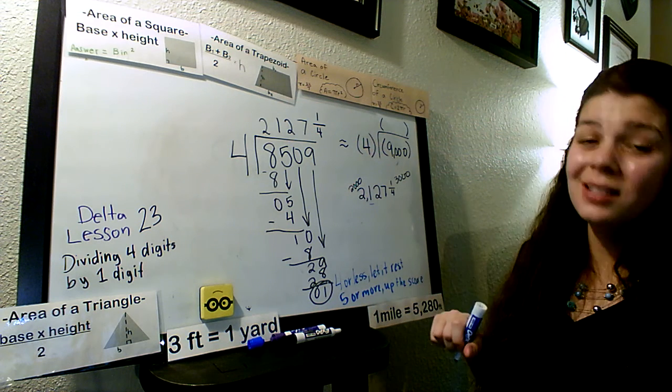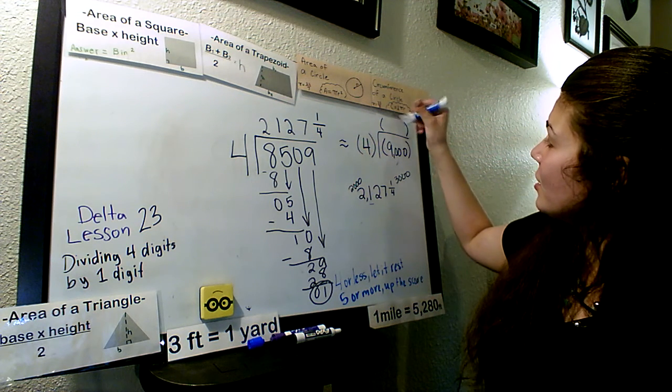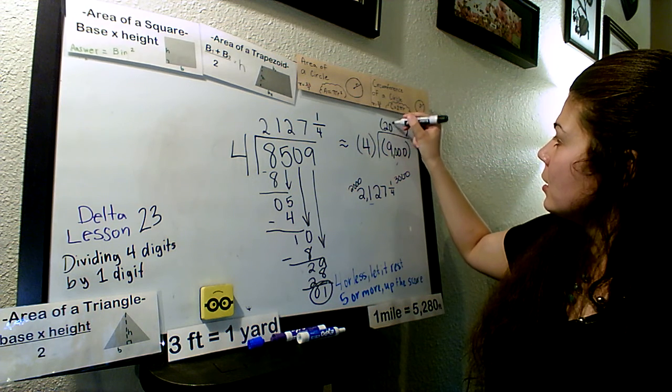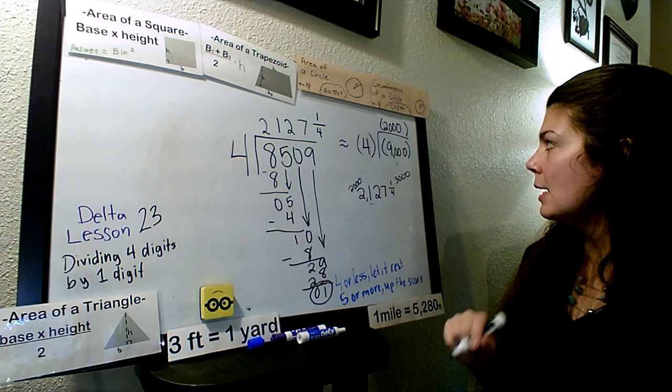4 or less, let it rest. 1 is less than 4. So that means our answer is going to round down to 2,000.